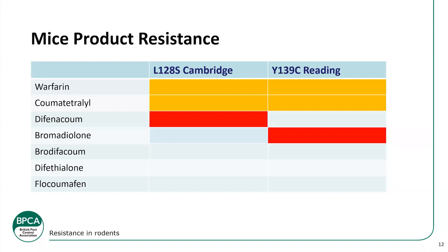For both rats and mice, resistance information can be found on the rrac.info webpage. There's a map on the screen — you need to click on the map before you can search it, then you can zoom into very small areas, even individual streets. It'll tell you how many susceptible rodents are in an area, how many are carrying a resistant strain, and which resistant strain has been found. Dr Alan Buckle also did a good webinar called '60 Years of Anticoagulant Resistance in the UK,' which has a lot more detail on mapping.